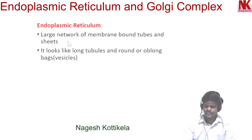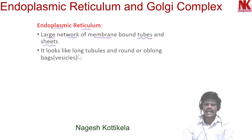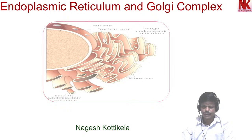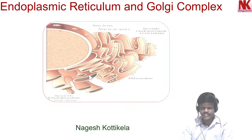Let's begin the session. Endoplasmic reticulum is a large network of membrane-bound tubes and sheets. It looks like long tubules and round or oblong bags called vesicles. You can see here in this picture membrane-bound tubes and sheets, and here you can see round or oblong vesicles. This is the structure of endoplasmic reticulum.